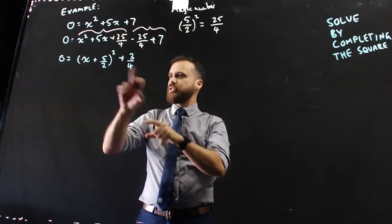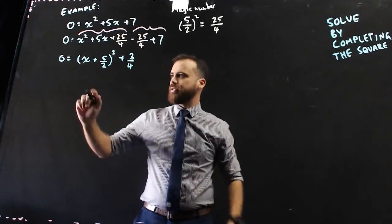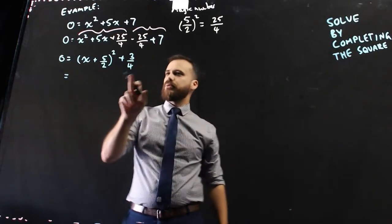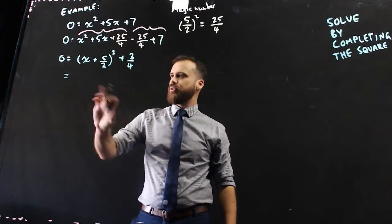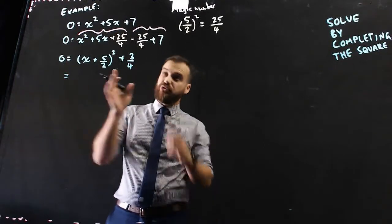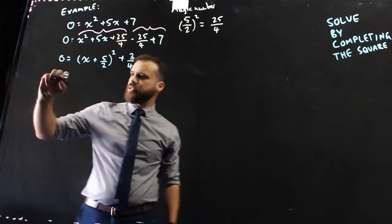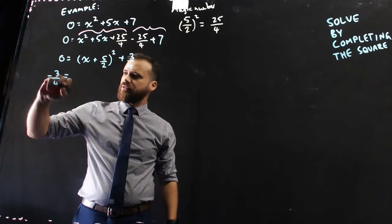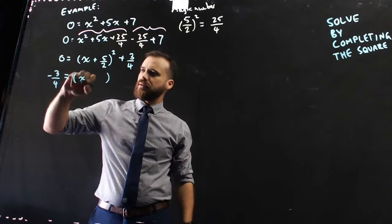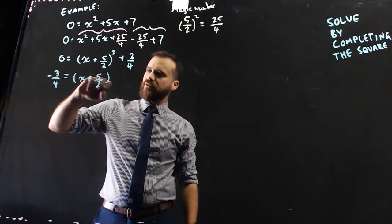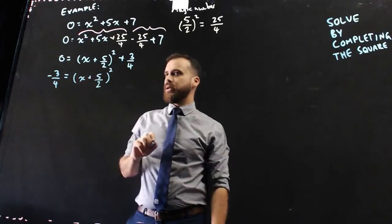So, now we need to rearrange this to make x the subject. First step would be to take 3 over 4 and move it to the other side, or subtract 3 over 4 from both sides. So that means negative 3 over 4 equals x plus 5 over 2 squared.